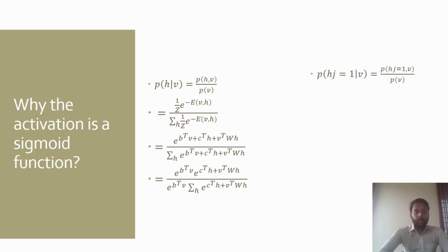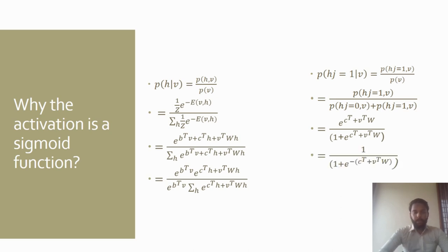Now we will take the case of h being one. We will use the result here, and by putting h equal to one, this equation is in the form of a sigmoid function with x being c transpose plus v transpose w.